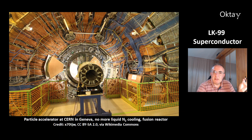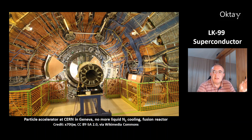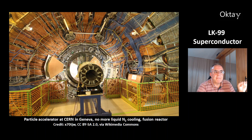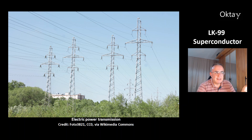Another use for high-temperature superconductors is a particle accelerator like the one at CERN in Geneva. This makes the machine much simpler because you no longer need liquid nitrogen for cooling. LK99 could also be very interesting for fusion reactors and for electric power transmission.